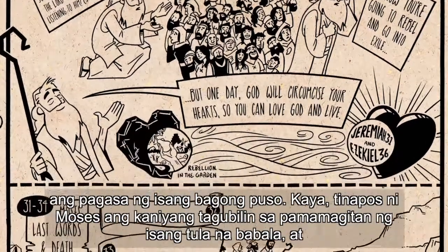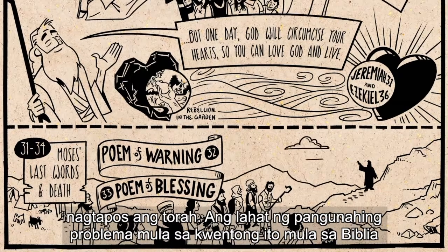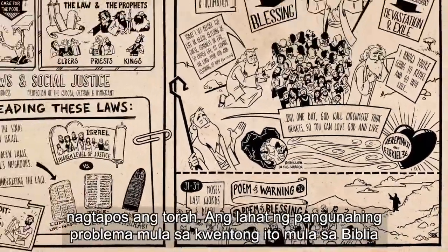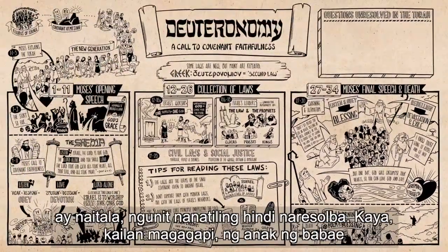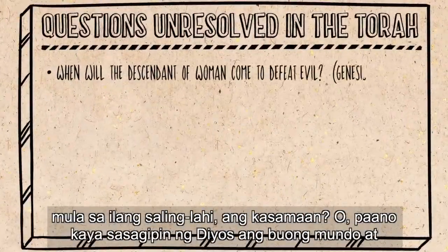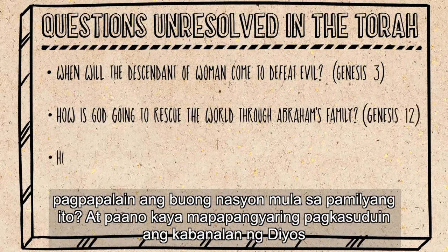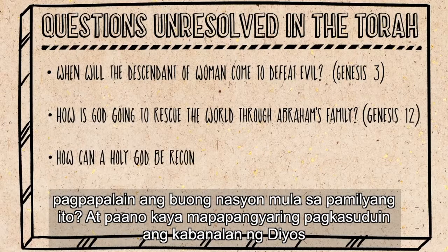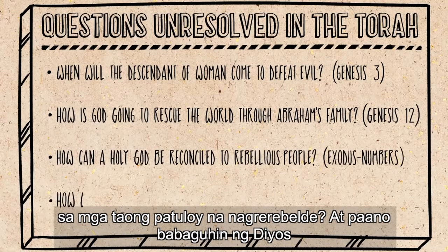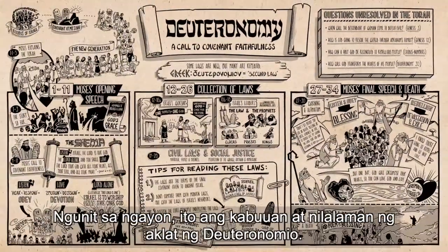Moses ends his speech with a poem of warning and then of blessing, and then he walks up onto a mountain and he dies. The Torah draws to a close, with all of the major plot tensions of the biblical story in place but left totally unresolved. When is the descendant of the woman going to come and defeat evil? How is God going to rescue the whole world and bless all nations through this family? How can God's holiness be reconciled with people who are continually rebellious? And how is God going to transform the hearts of his people? You just have to keep reading to find out. But for now, that's what the book of Deuteronomy is all about.